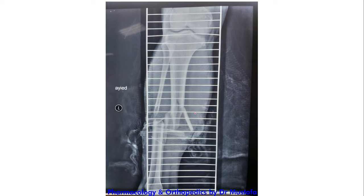Here we have an X-ray of a tibial and fibular fracture, a comminuted type. When we describe it, we mention the fracture shape — comminuted type of fracture in the mid shaft of the tibia — with lateral displacement of the distal fragment.